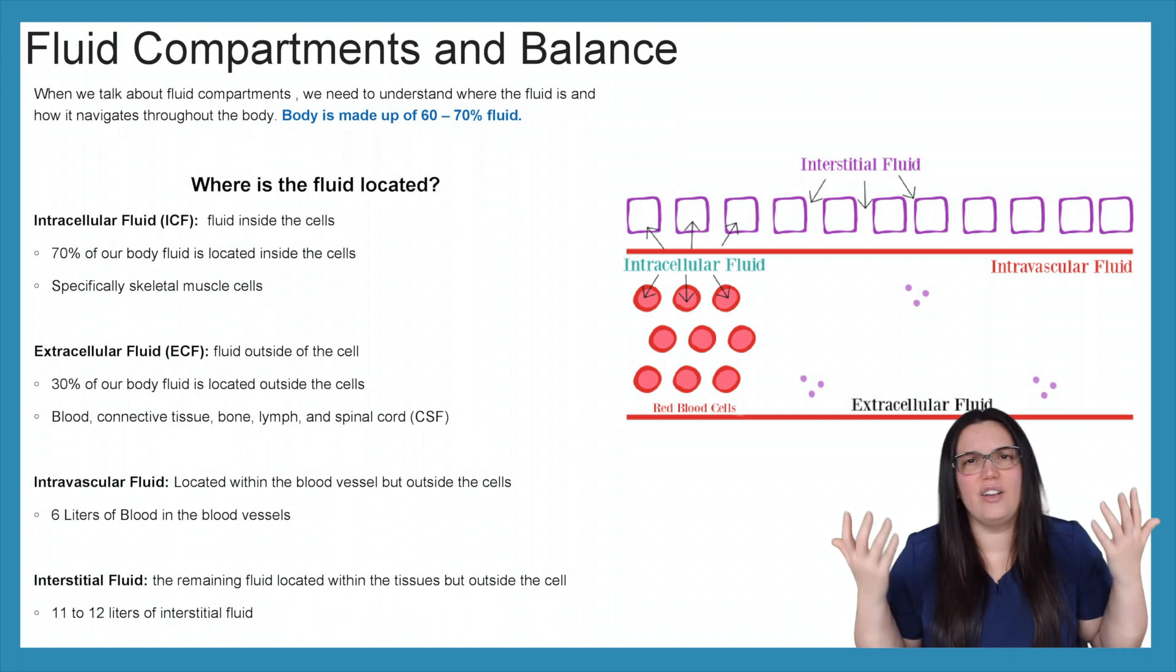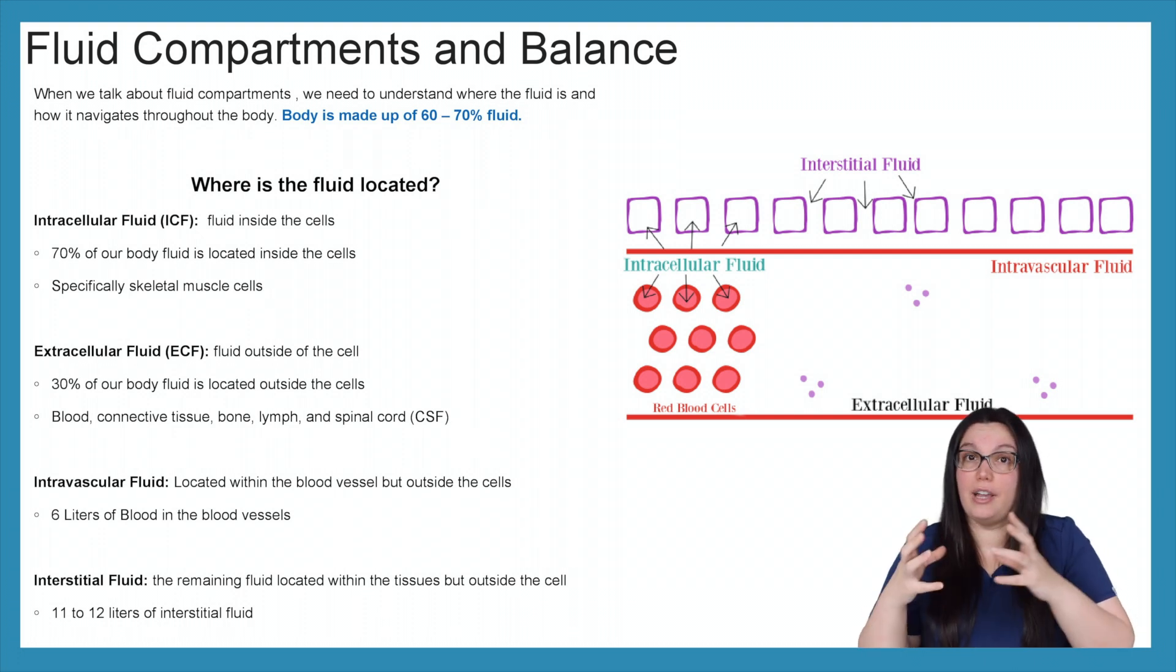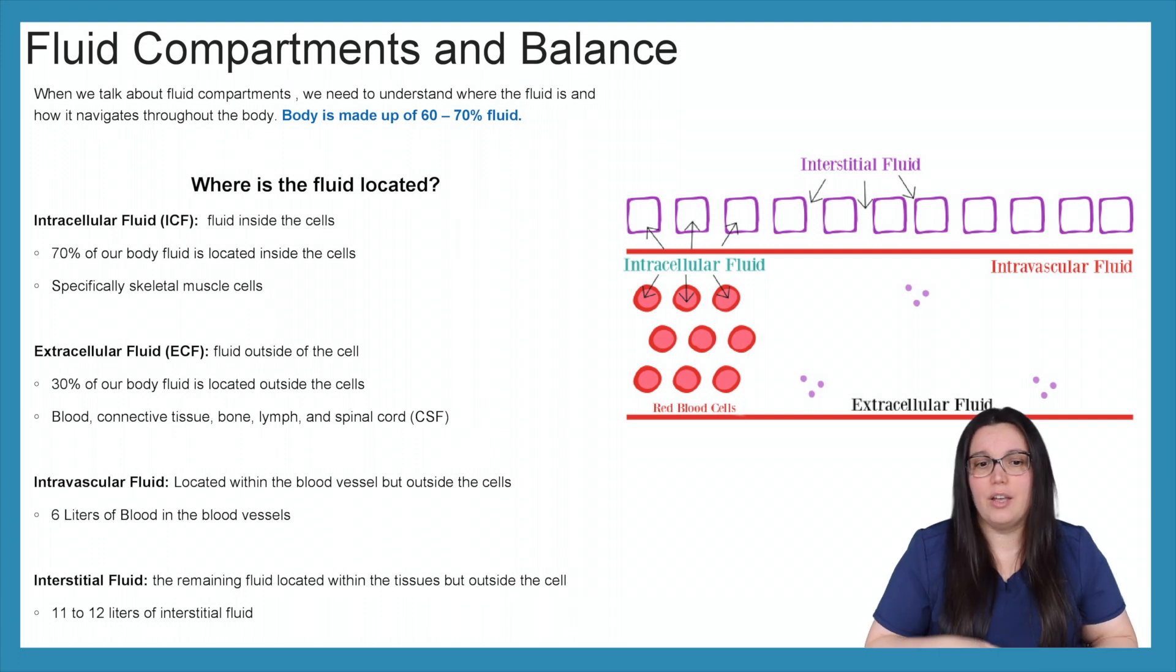So where is all that fluid located? Well we have two main categories. It's either intracellularly or extracellularly. When it comes to our intracellular fluid or ICF, that's the fluid that's found within our cells or inside of our cells. So 70 percent of our body fluid is located inside the cells. Specifically our skeletal muscle cells.